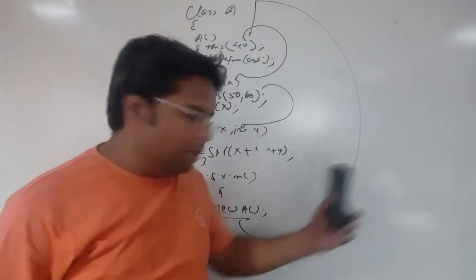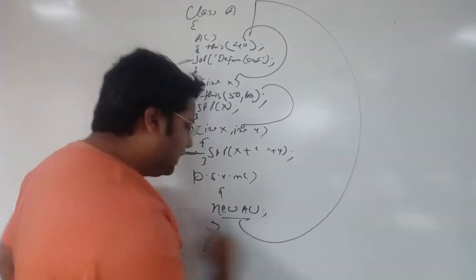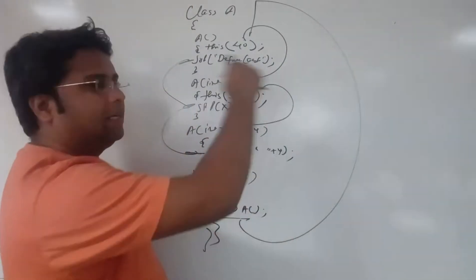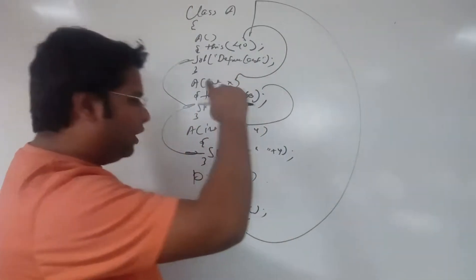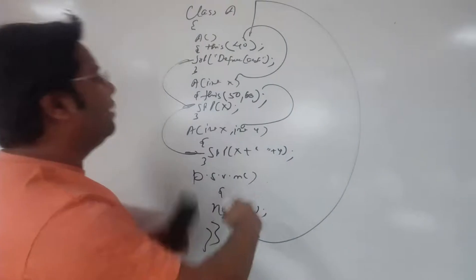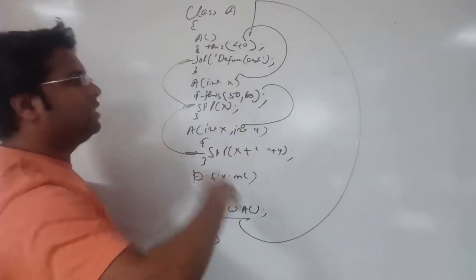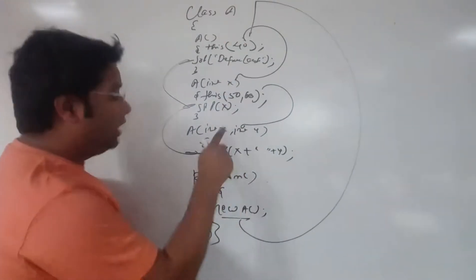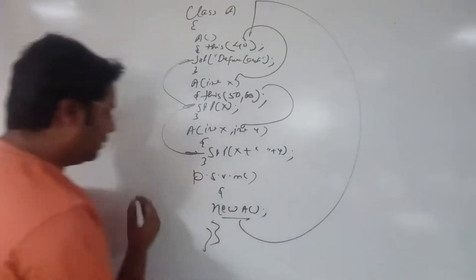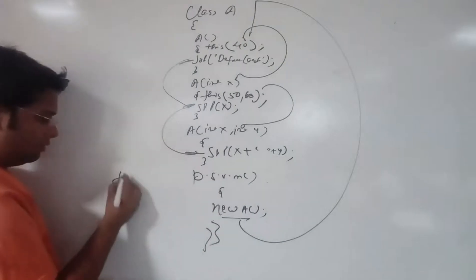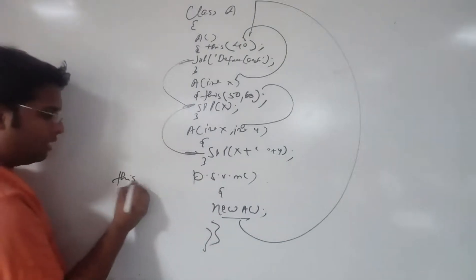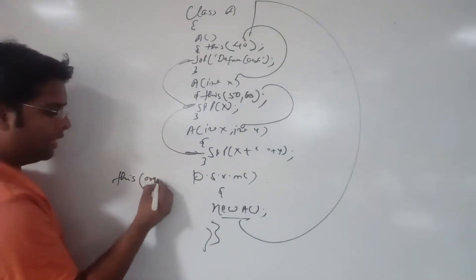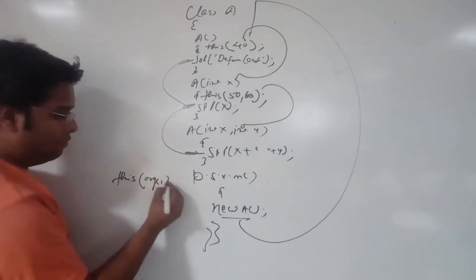Constructor Chaining is where object A calls multiple constructors. When multiple constructors are called on a single object, that is called Constructor Chaining.